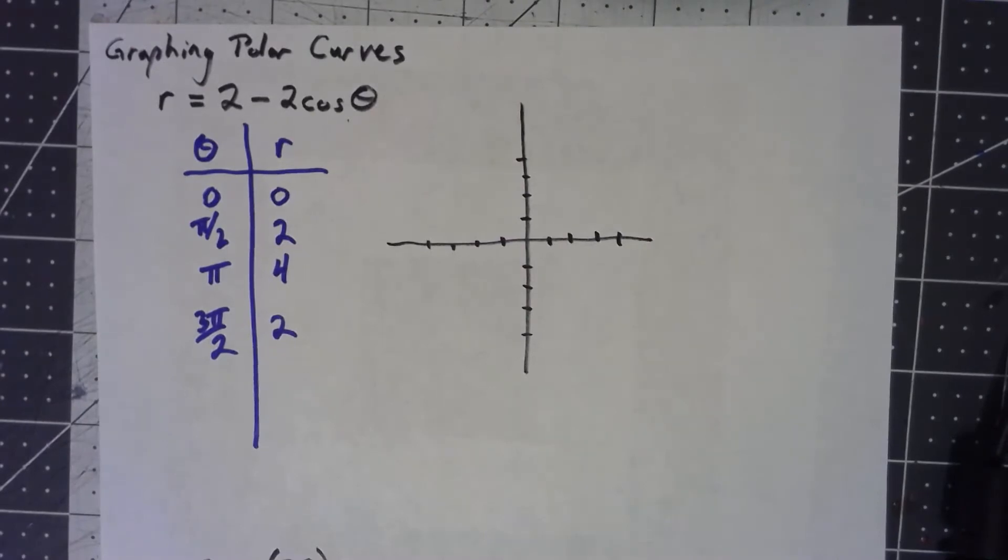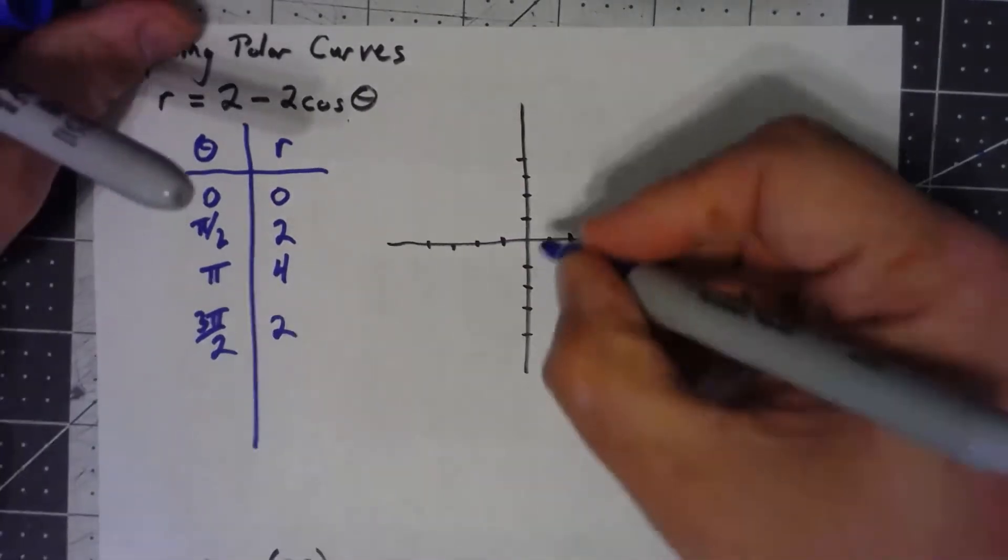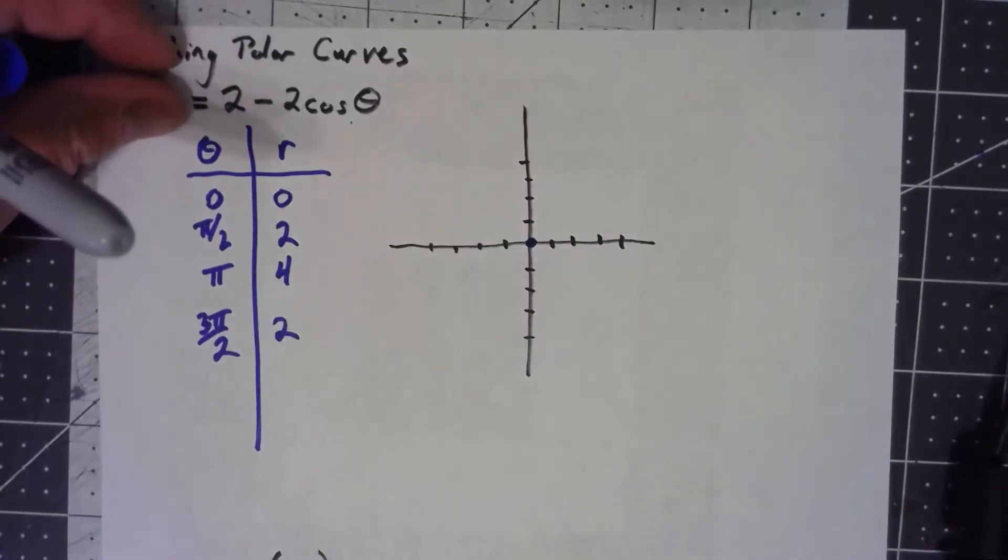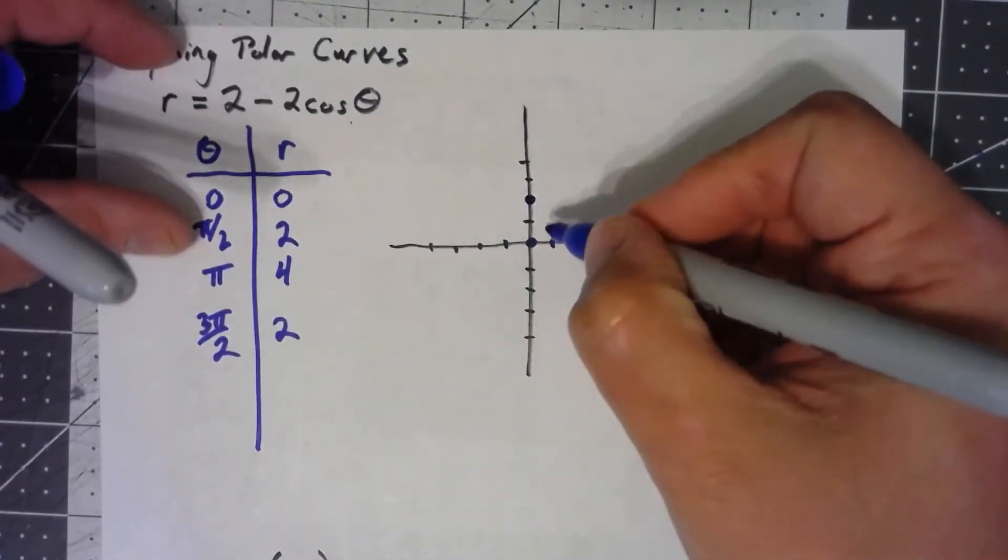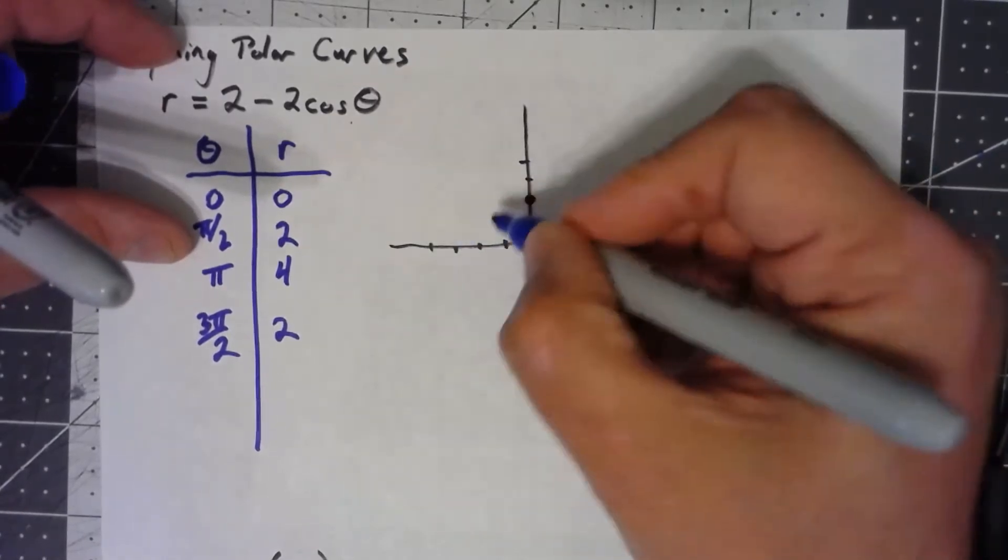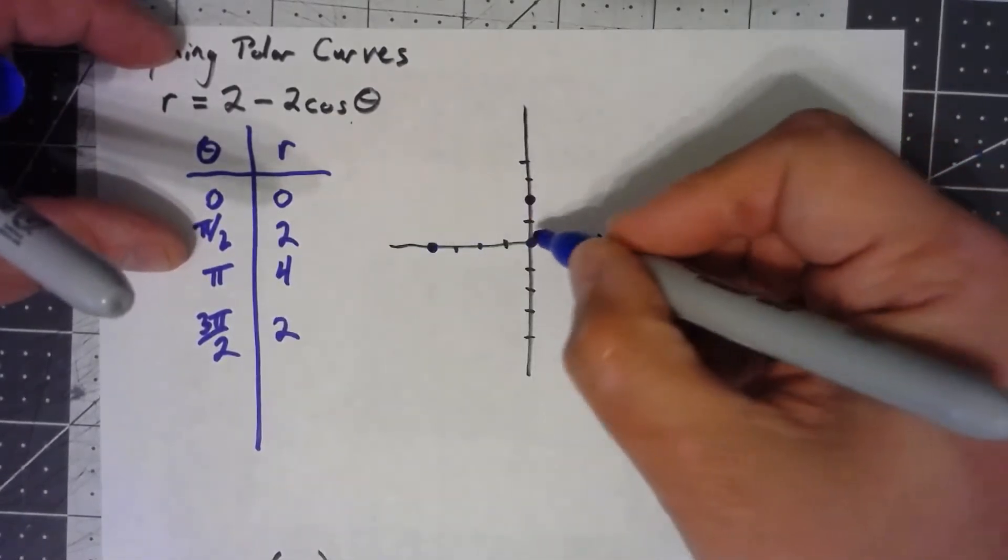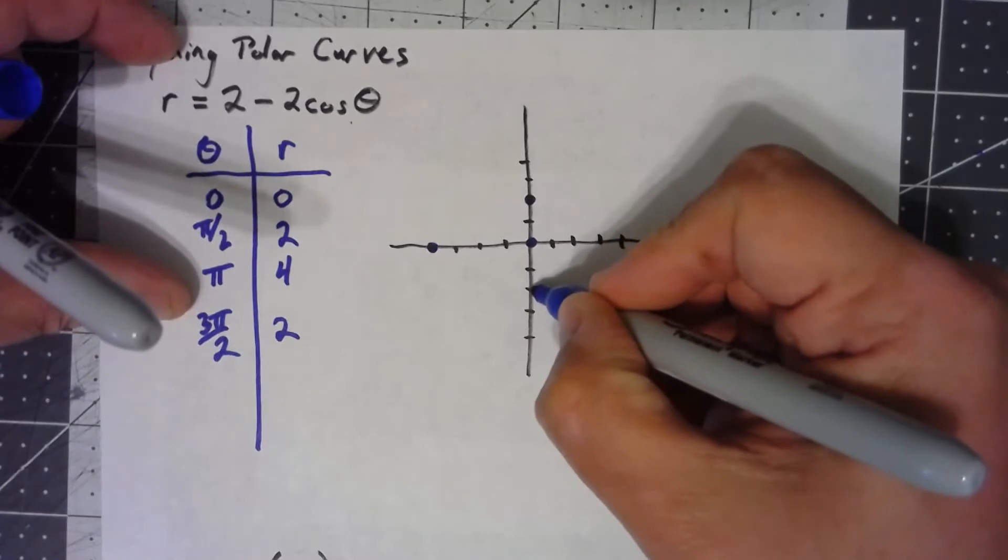anytime we've got a radius of 0, it doesn't matter what the angle is, we've got 0. At pi over 2, we're going out 2. At pi, we're going out 4, and at 3 pi over 2, we're going out 2.